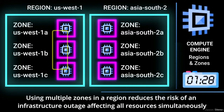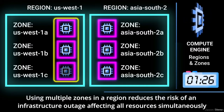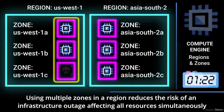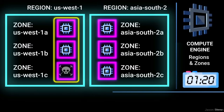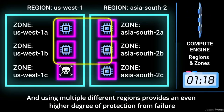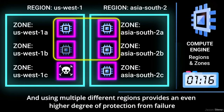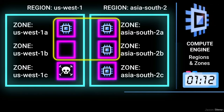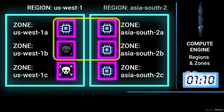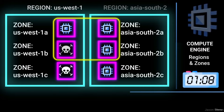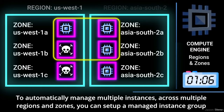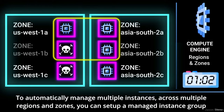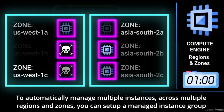Using multiple zones in a region reduces the risk of an infrastructure outage affecting all resources simultaneously. And using multiple different regions provides an even higher degree of protection from failures.